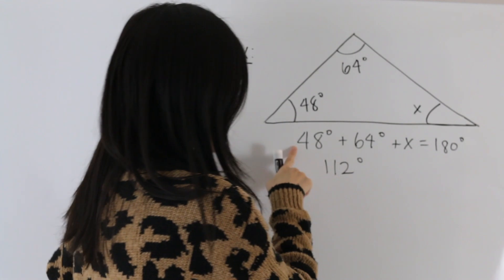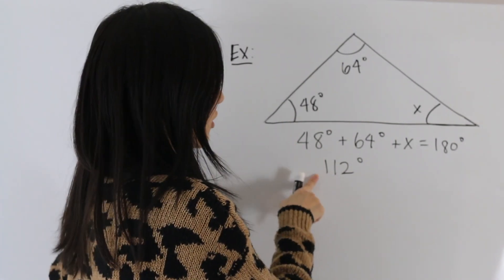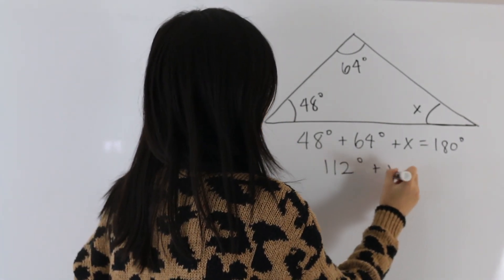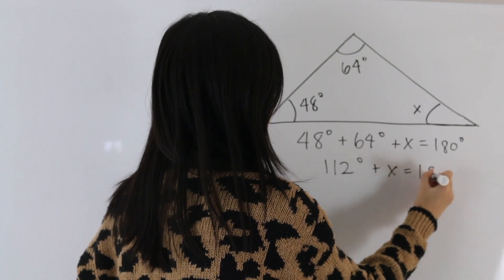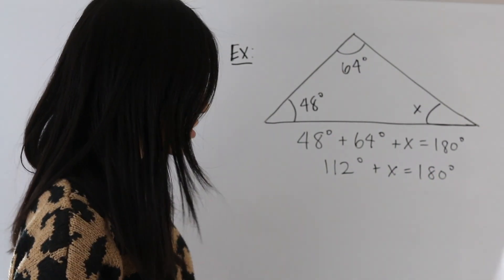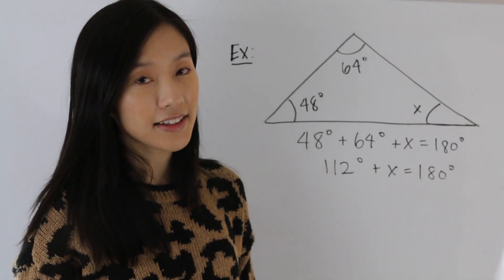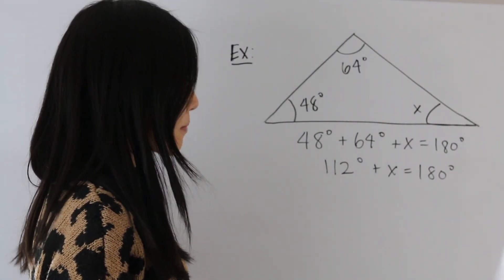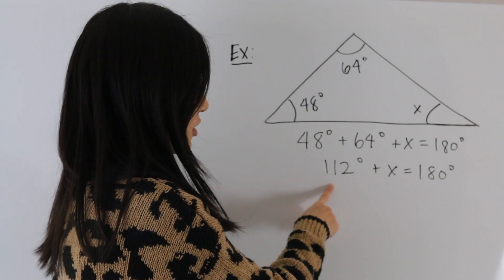So this equation becomes 112 degrees plus X is equal to 180 degrees. So in this final step, we want to isolate the X. So we're going to do that by subtracting both sides by 112 degrees.